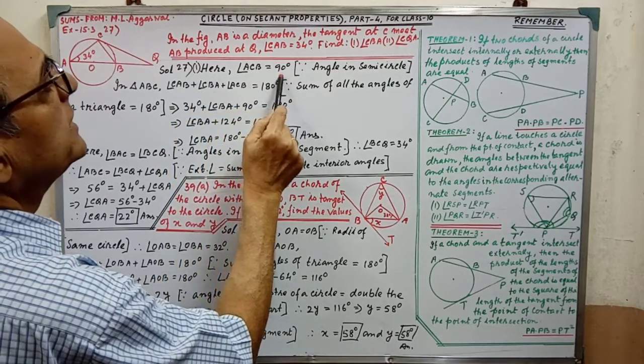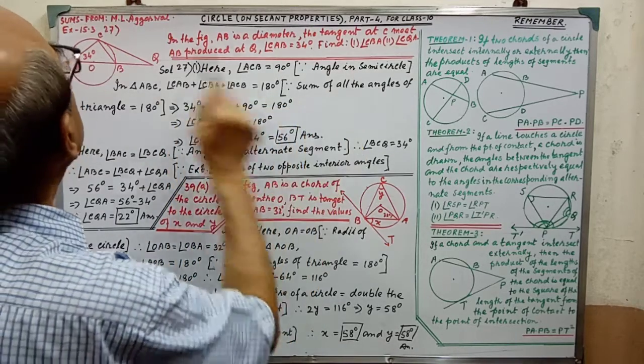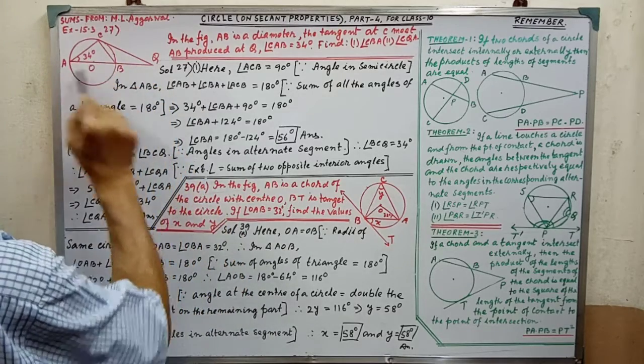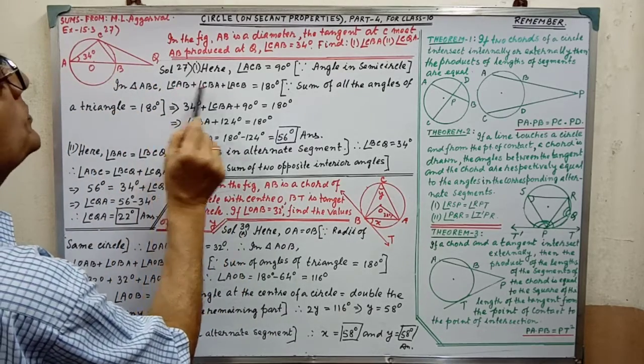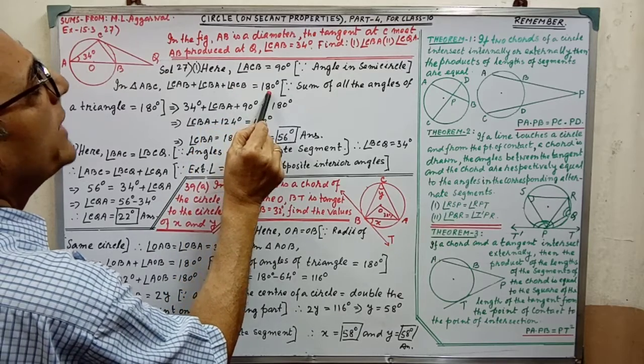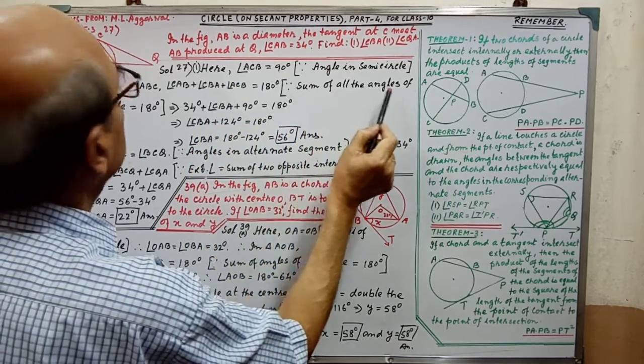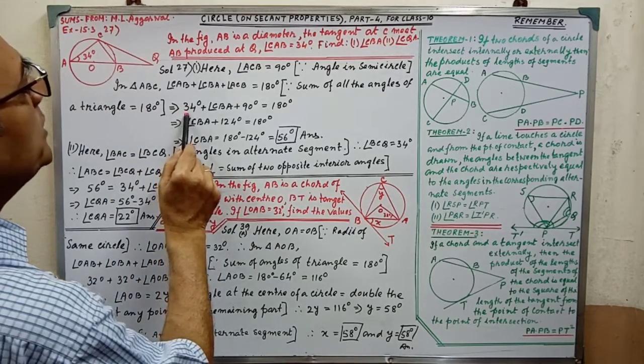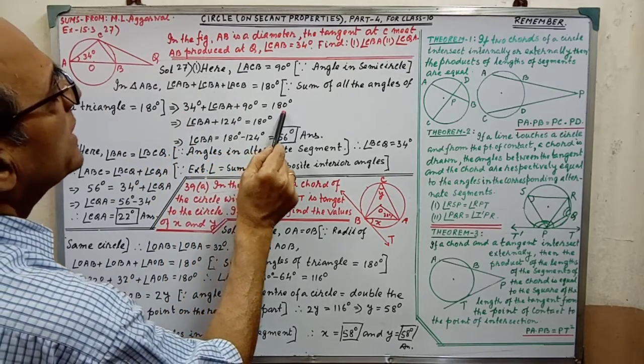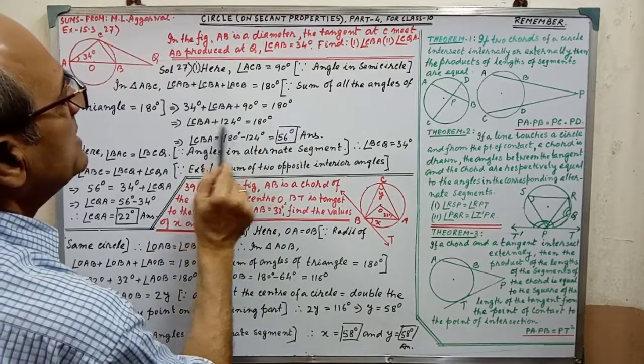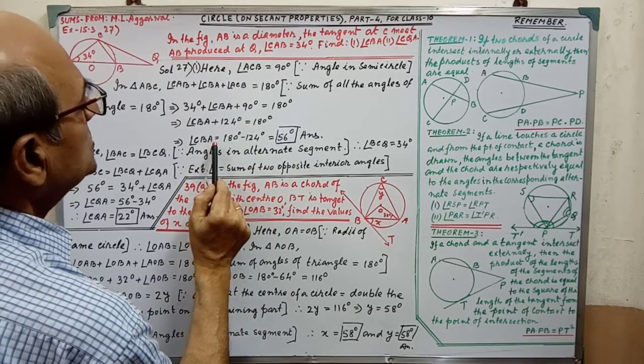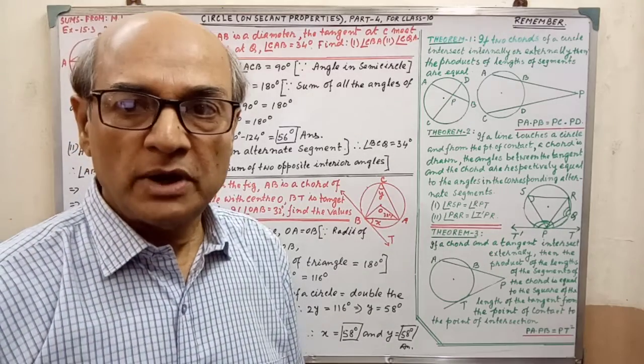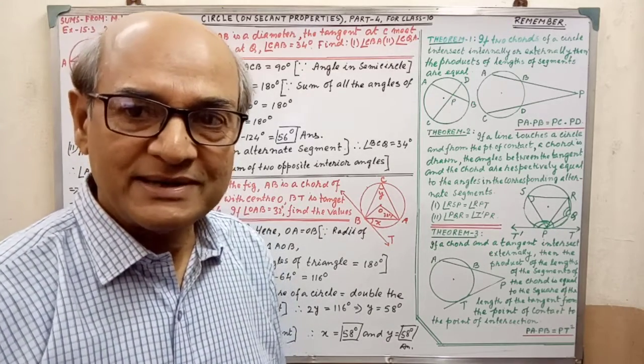Here angle ACB equal to 90 degree, since angle in semicircle is 90 degree. In triangle ABC, sum of three angles equal to 180 degree. Sum of all the angles of triangle equal to 180 degree. By putting the relevant values, we are getting 180 degree. By simplifying, we are getting CBA equal to 56. Part 1 of this question is completed.